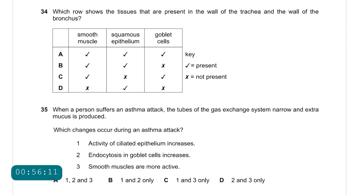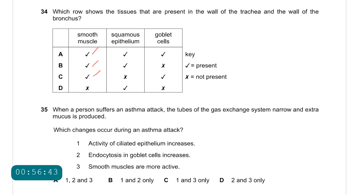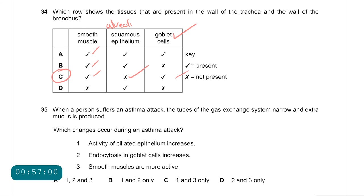Question 34: which row shows tissues present in both the trachea and the bronchus wall? Smooth muscle — yes, both have smooth muscle — correct. Squamous epithelium — incorrect; squamous epithelium is only found in the alveoli. Goblet cells — correct; both have ciliated epithelial cells and goblet cells. Answer is C.